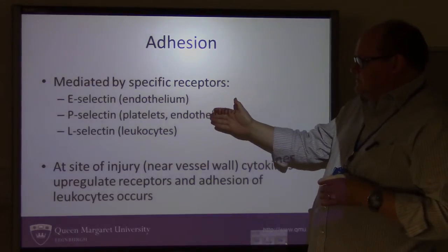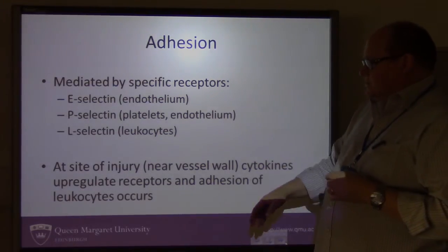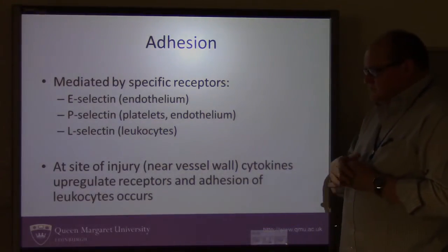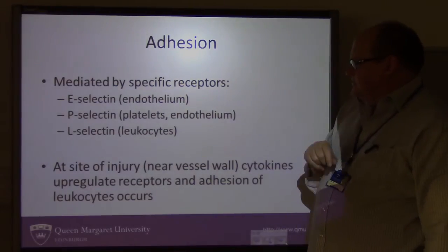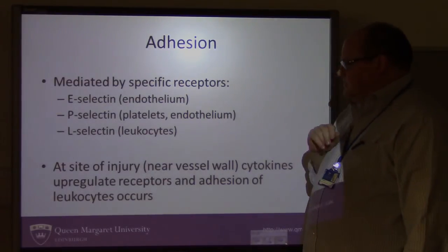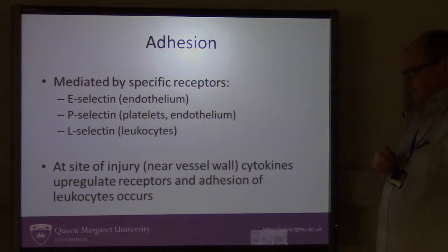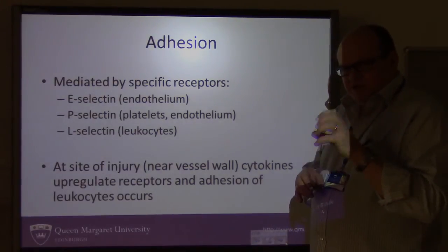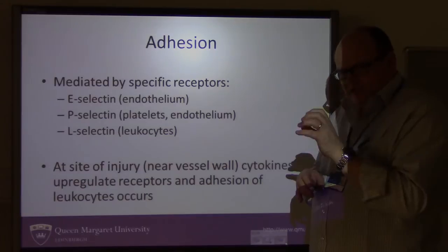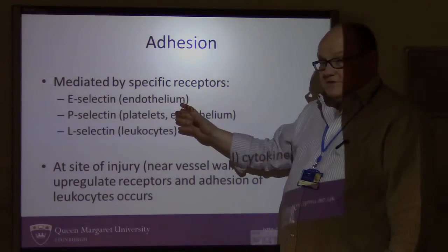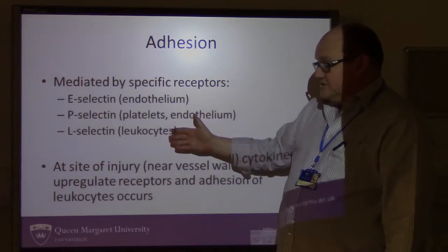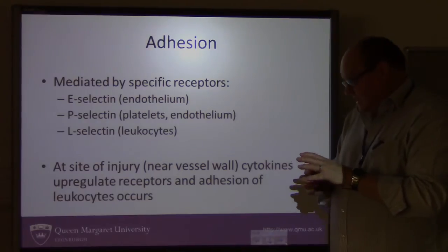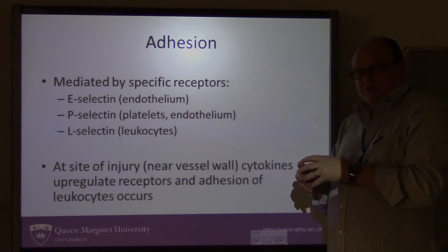There are specific receptors that cause this: E-selectin, P-selectin, and L-selectin. E-selectin is on the endothelium, P-selectin is on the endothelium, and L-selectin is on the leukocytes. The stimulus from the inflamed tissue to the endothelial cells upregulates these receptors, and the upregulation of these receptors is what draws the leukocyte in and causes it to stick in the adhesion process.